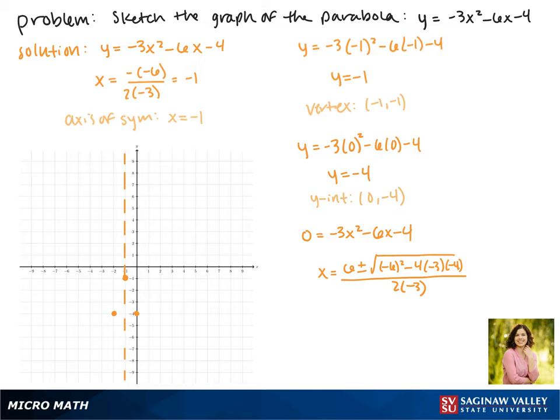Now what's underneath the square root here ends up being negative. We can't take the square root of a negative, so we have no solutions here, which means we have no x-intercepts. This makes sense since our vertex is down here and our parabola opens down. So now we just have to sketch our parabola.